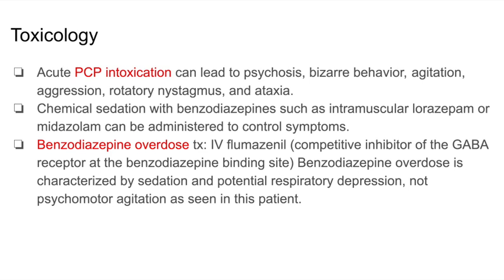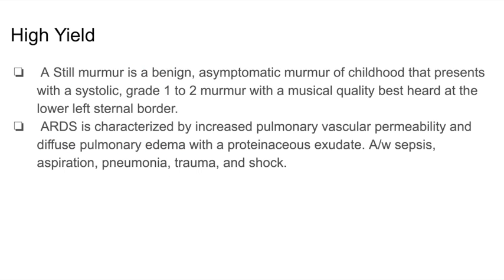Another high-yield fact is Still's murmur, which is a benign, asymptomatic murmur of childhood that presents as a grade 1 to 2 systolic murmur best heard at the lower left sternal border. Another high-yield condition is acute respiratory distress syndrome, characterized by increased pulmonary vascular permeability and diffuse pulmonary edema with a proteinaceous exudate. It is associated with conditions such as sepsis, trauma, pneumonia, aspiration, and shock.